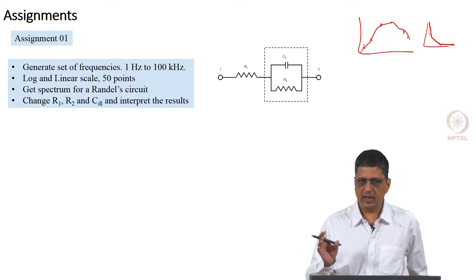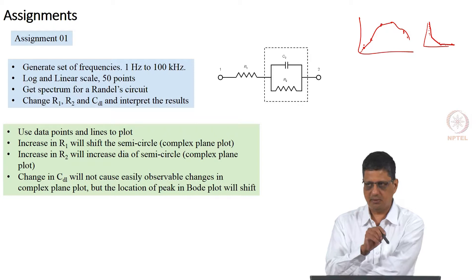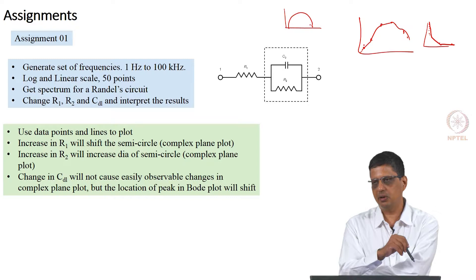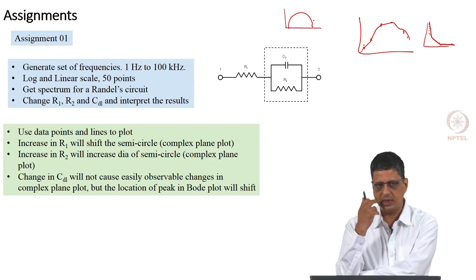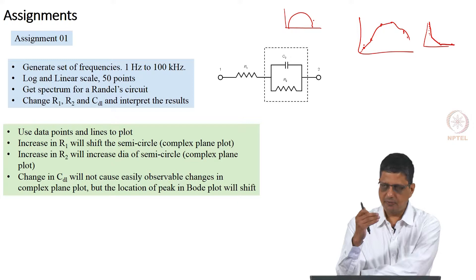And if you look at complex plane plot, what is commonly called this Nyquist plot. If we change the R1, this entire circle will shift to the right in the complex plane plot. In the Bode plot, you will have pair of responses, right, real and imaginary or phase and magnitude and they will move. In the phase, you may not see much of a change. In the magnitude, you will see that it is shifted.